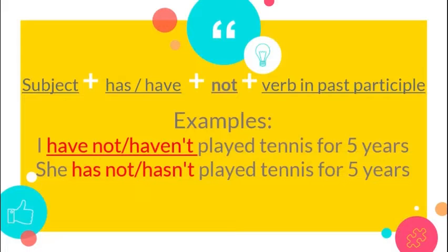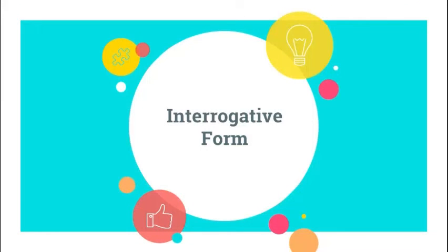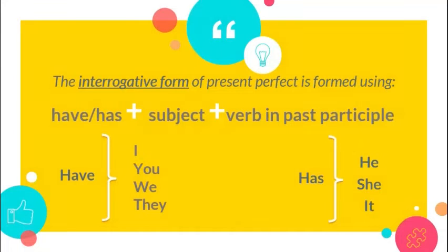Interrogative form. The interrogative form of present perfect is formed using the auxiliary have or has plus subject plus verb in past participle.